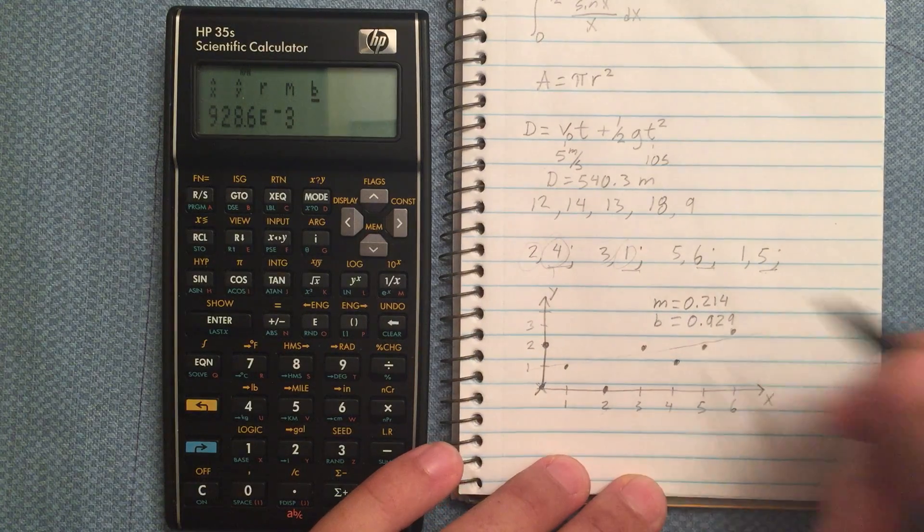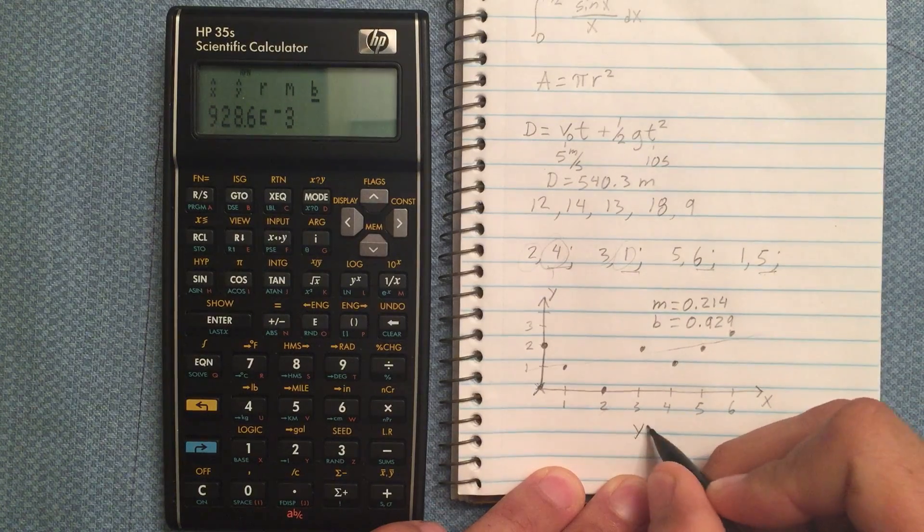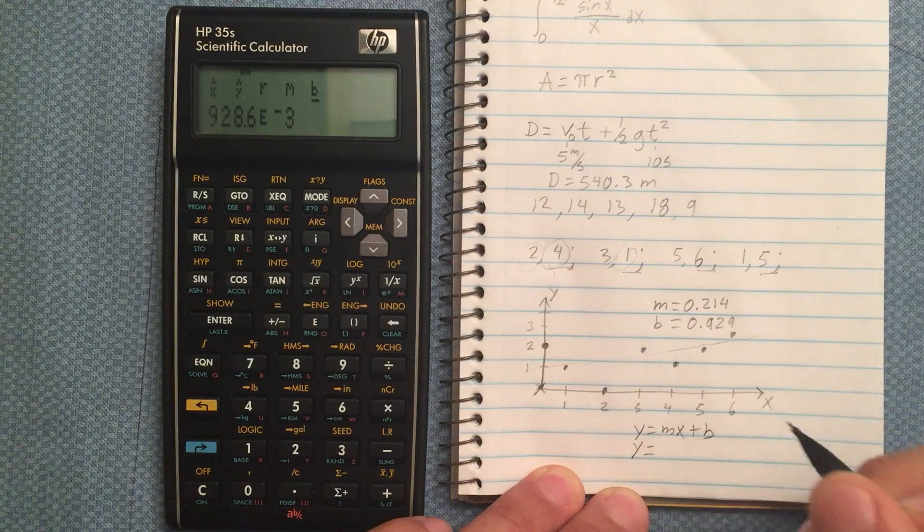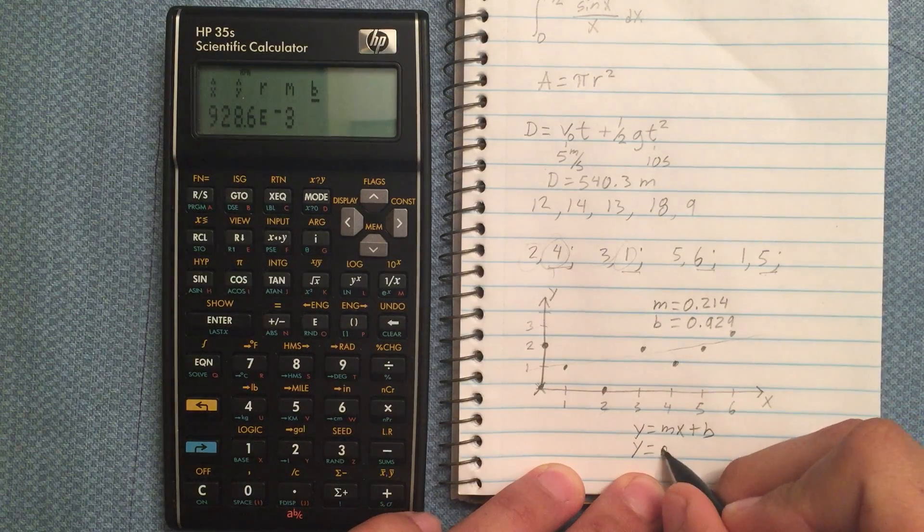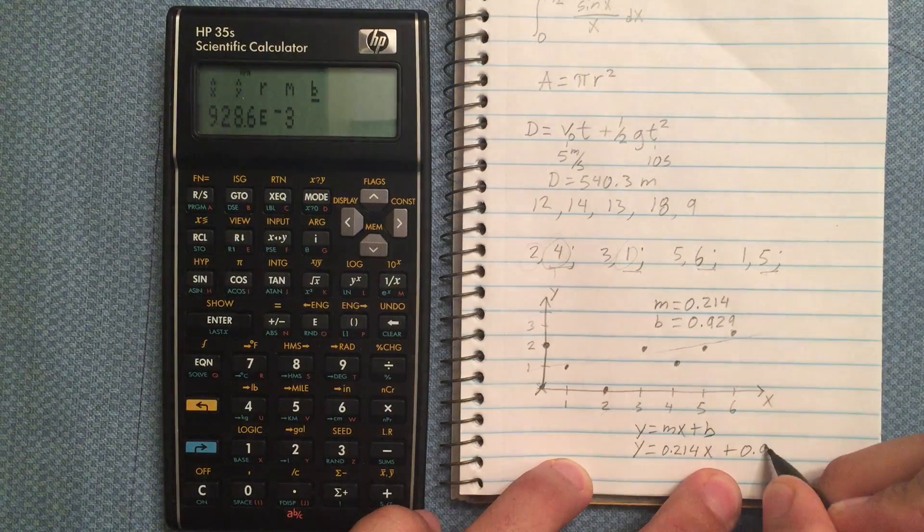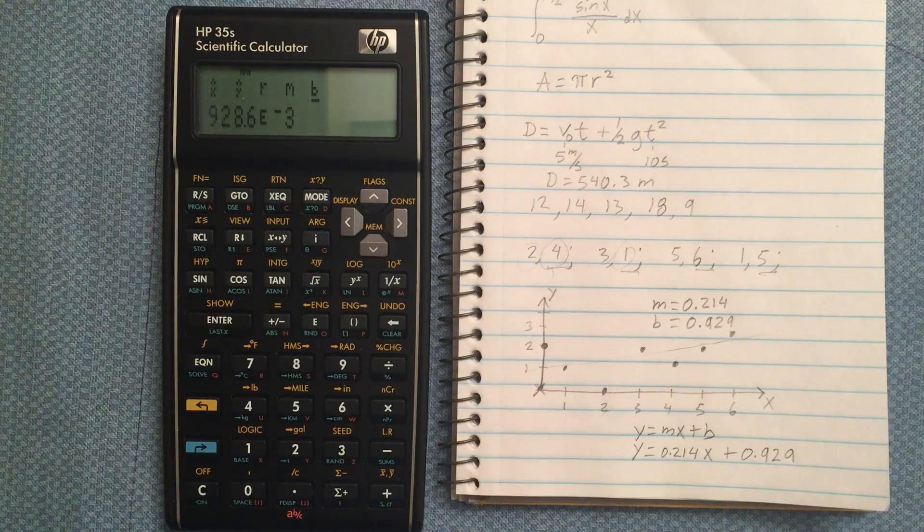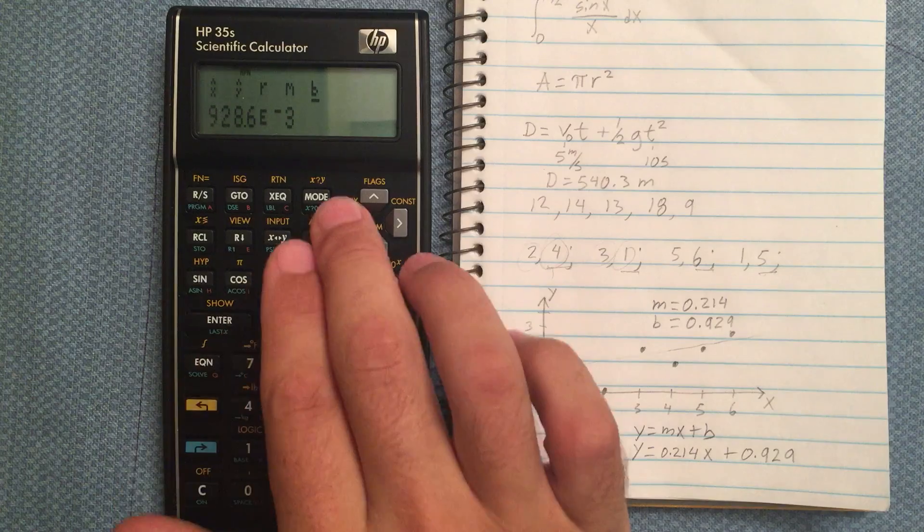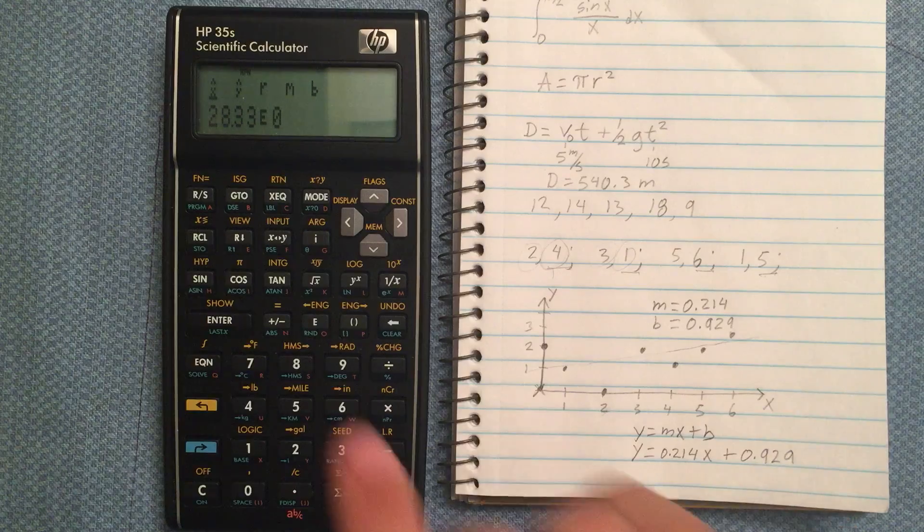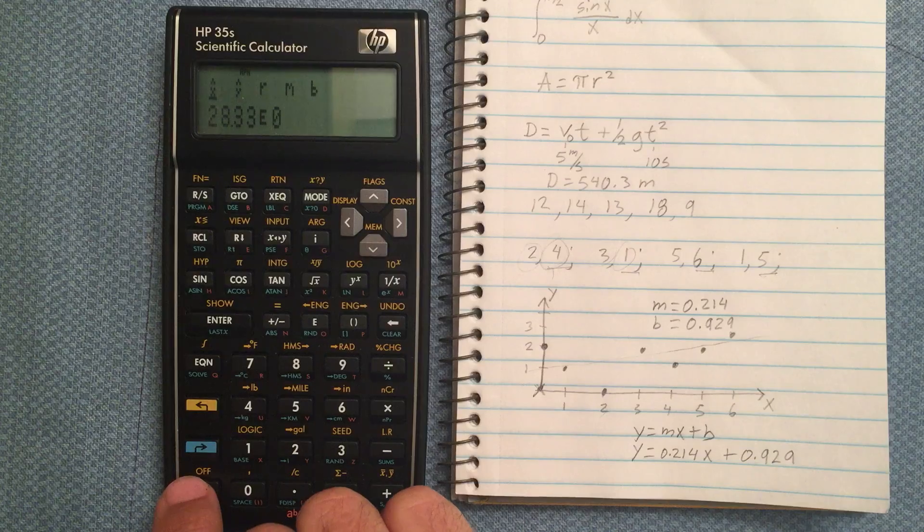So that actually fits into my equation. Y equals mx plus b. So the equation for this line is going to be 0.214x plus 0.929. Now what these first two do is they give me a way of evaluating this equation without actually putting the equation into the calculator or doing the calculation.